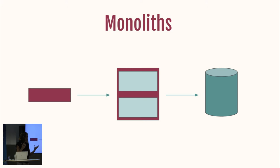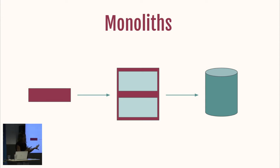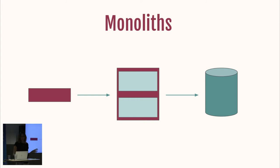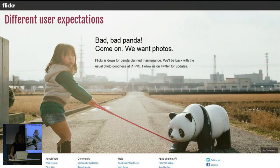It made sense to build applications this way because when we didn't have public clouds, when we didn't even have virtualization, we had to wait weeks or months to get a new server. So it made sense to optimize by having everything in one place. It's still a very good architecture if you want to just prototype something quickly.